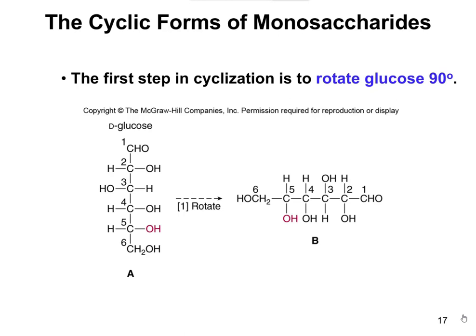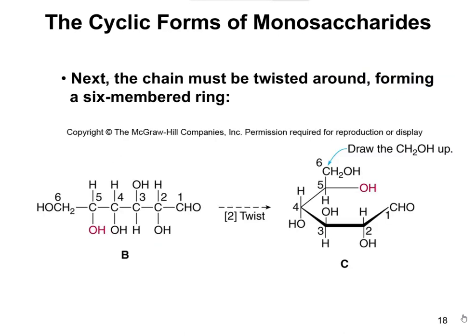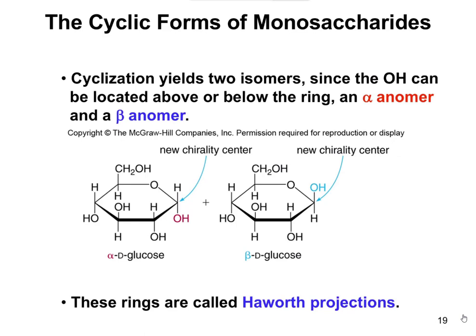The first step in drawing it is to rotate it 90 degrees clockwise, because the direction does matter. You rotate it 90 degrees clockwise, then twist it around a bit so that the OH from carbon 5 is closest to that carbonyl group — that CHO. Then the bond forms between those, and you end up with two different products, which we refer to as anomers. Anomers are another type of isomer.